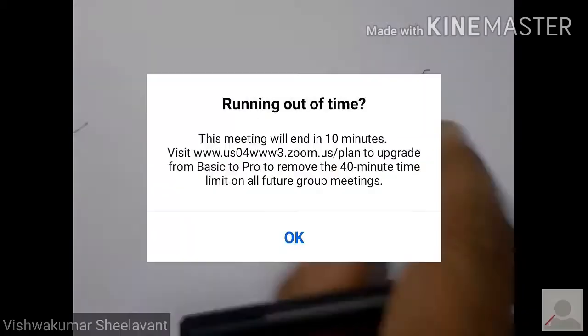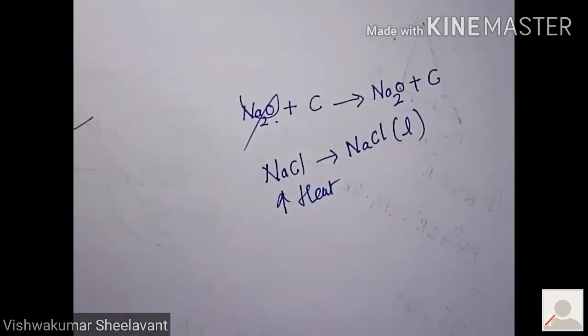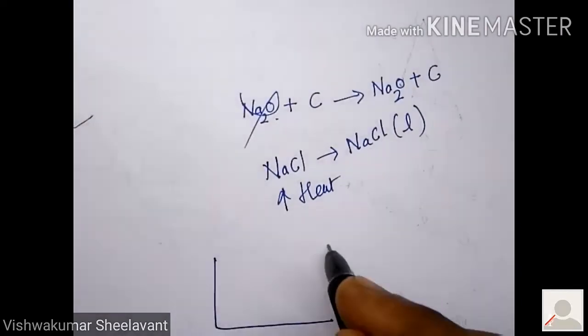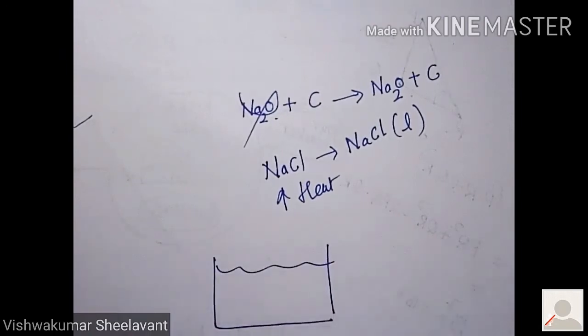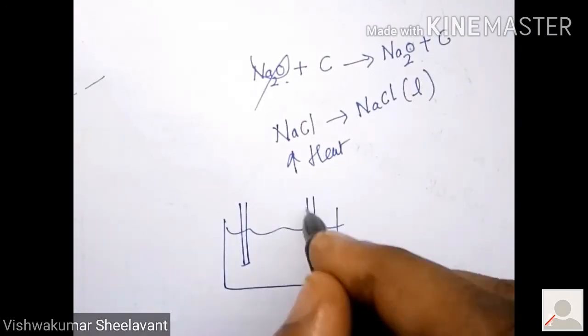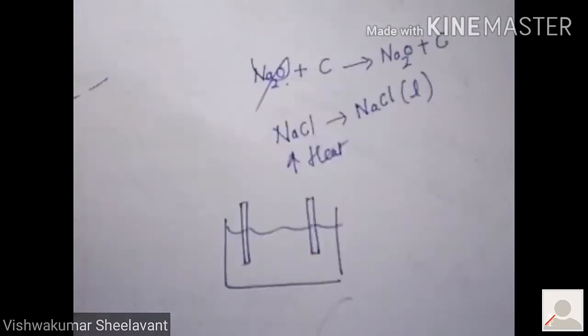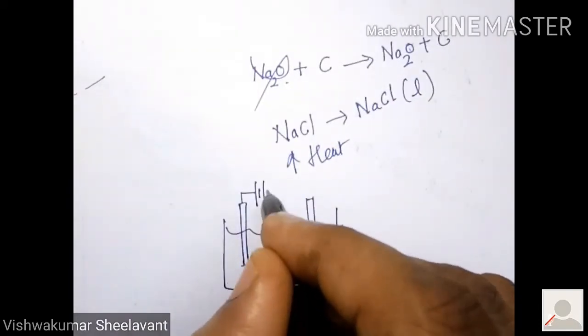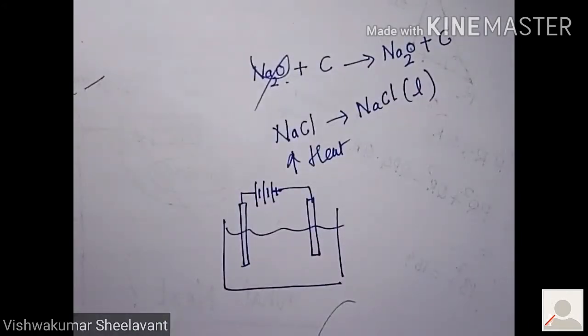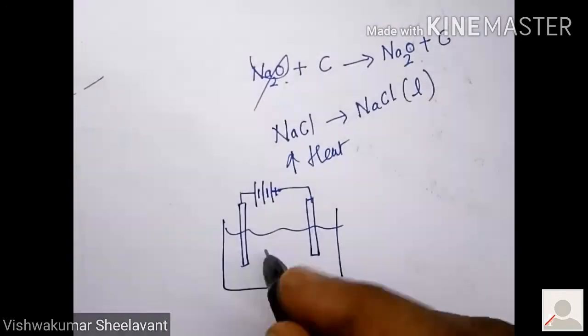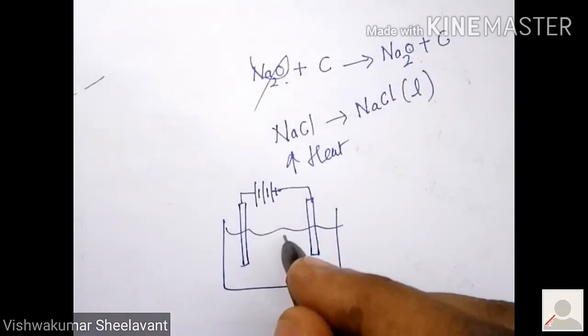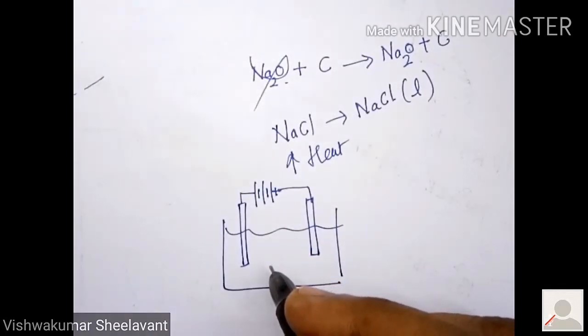So when you get such a liquid NaCl, then pass the current through it. This is liquid NaCl. We have here two electrodes. Connect them to battery. Let the current flow.